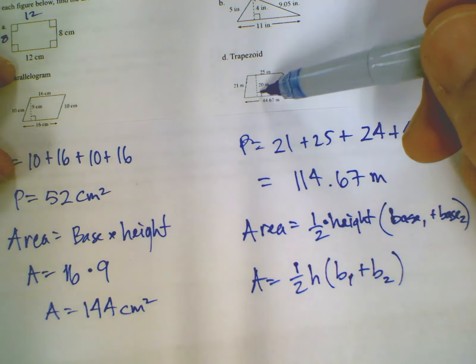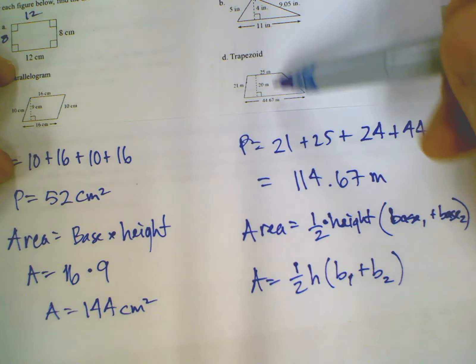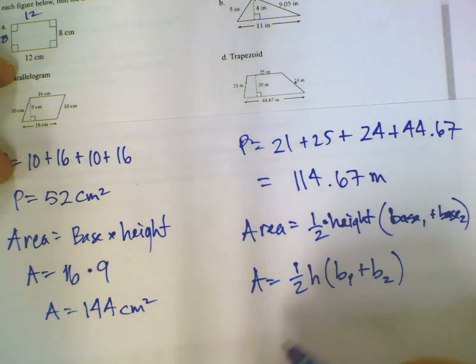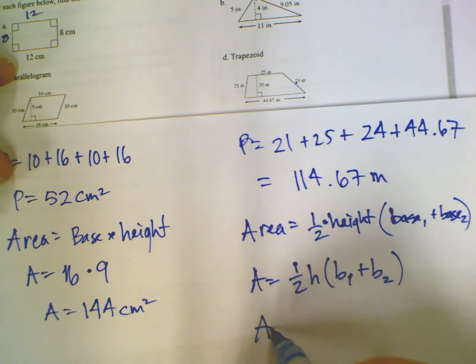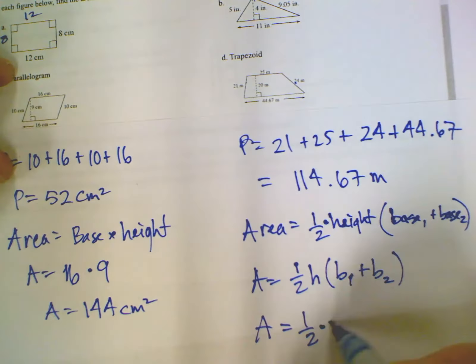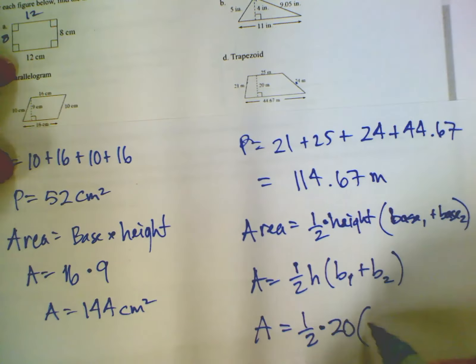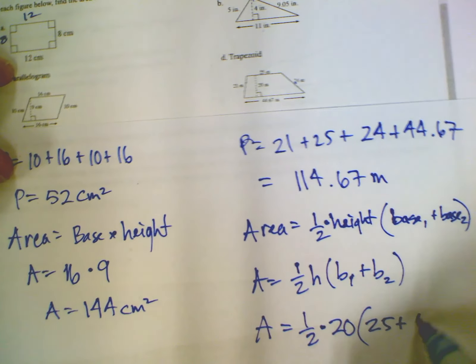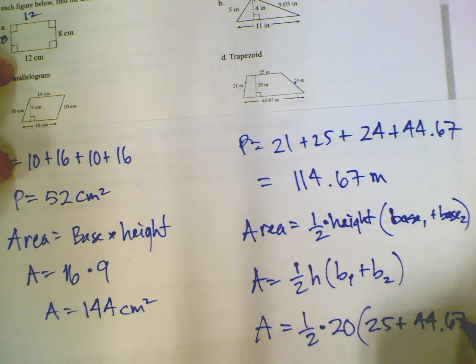So look at, here's my height. And who is it perpendicular to? It's perpendicular to the top line and the bottom line. So those are both the bases. So either one could be base 1, base 2. It does not matter because you're adding them. So in this case, it's going to be one half times the height, which is 20, times 25 plus 44.67.